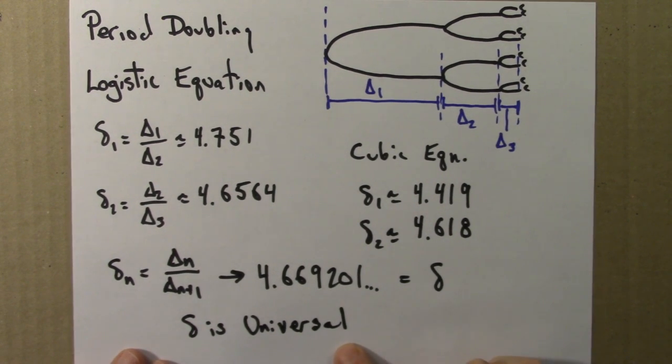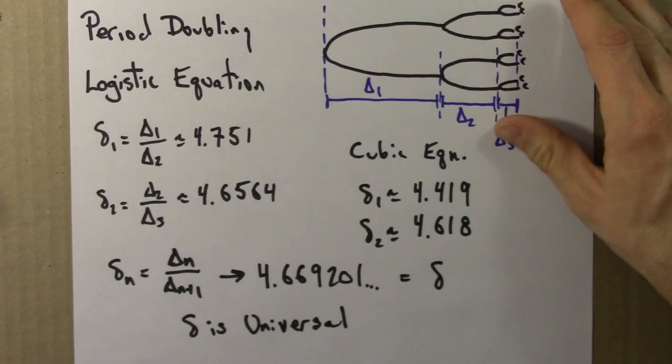And what that means is that it has the same value for a very large class or family of functions. Let me state this a little bit more carefully, since it's a crucial result.